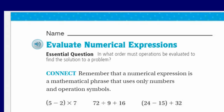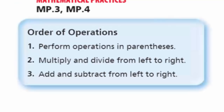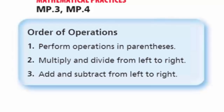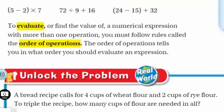So what should I do first here? The order of operations says: number one, we perform operations in parentheses — those little brackets we use in math. Number two, we multiply and divide from left to right. And then we add and subtract from left to right. To evaluate a numerical expression with more than one operation, you must follow rules called the order of operations.